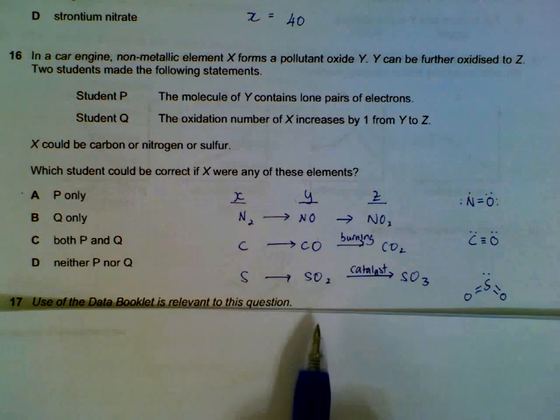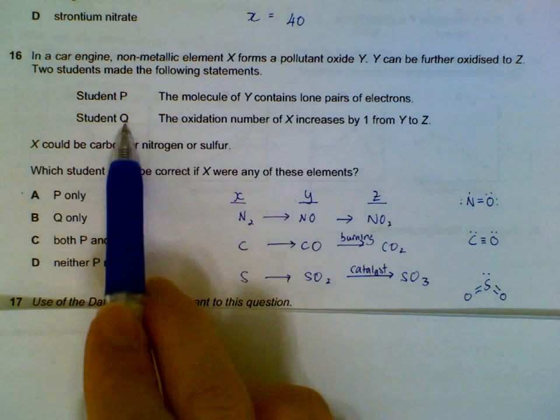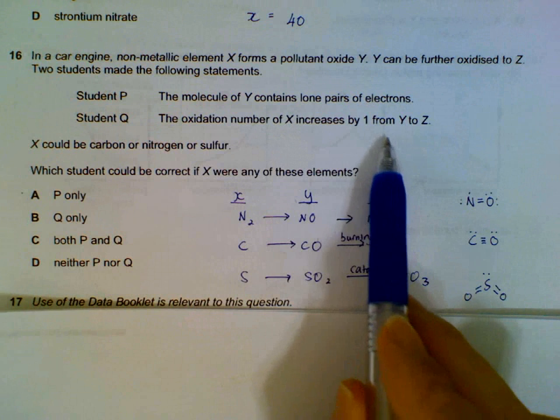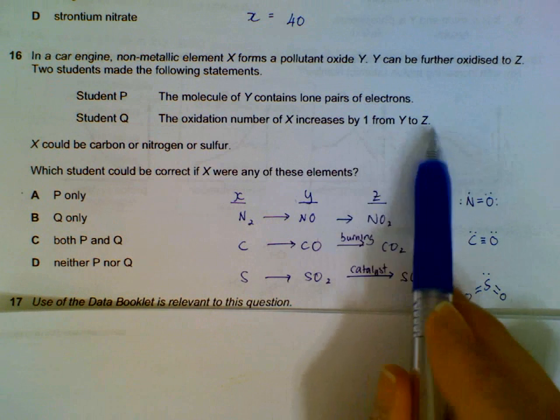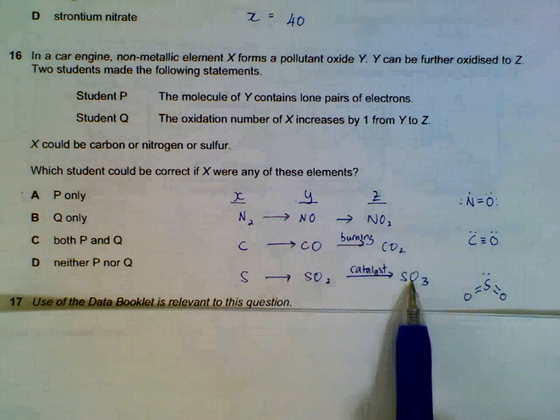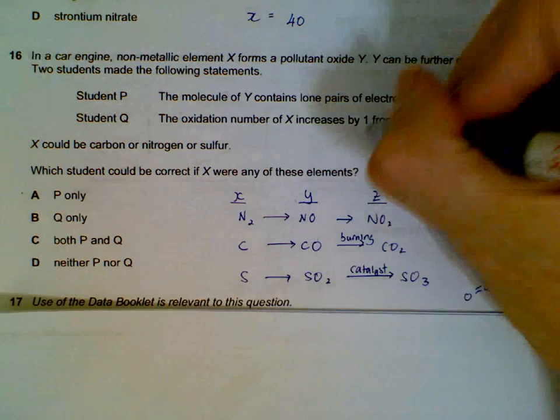Which student could be correct? Student Q might be easier to check. Oxidation number of X increases by 1 from Y to Z. So comparing Y to Z, they gain 1 oxygen. The oxidation number actually increases by 2.